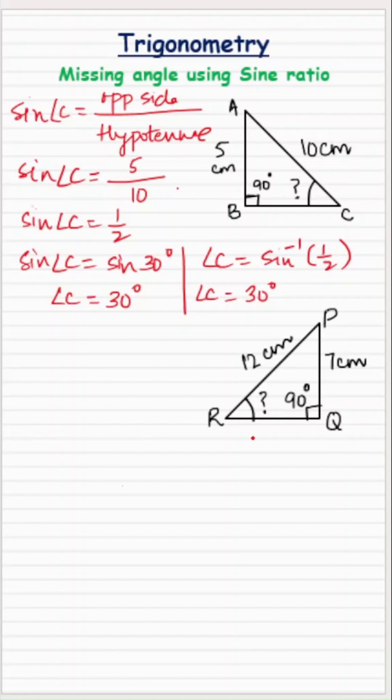Now let's do the second one in which angle R is missing and the two sides are given to be 7 and 12. Angle Q is 90 degrees. So let's do it in the same way. Sine of angle R is the ratio of the opposite side to the hypotenuse.